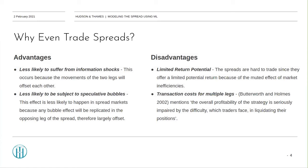Sweeney notes that speculative bubbles are a big source of market inefficiency. This is less likely to happen in spread markets because any bubble effect will be replicated in the opposing leg, assuming the two legs are sufficiently correlated.